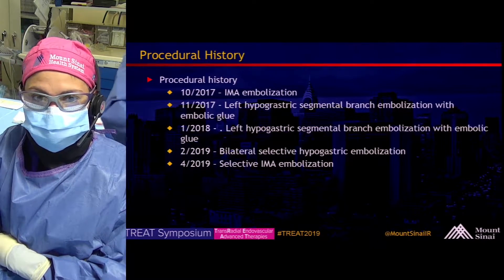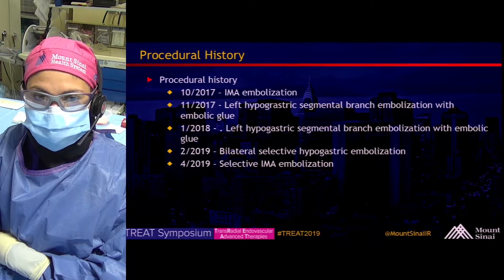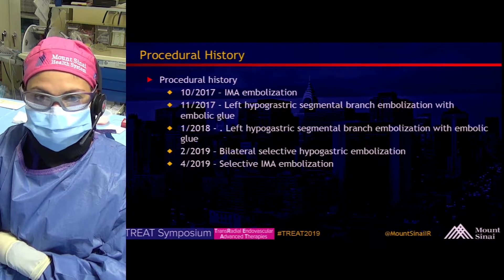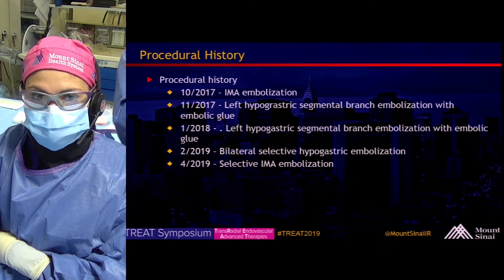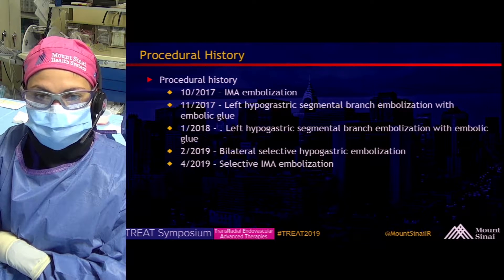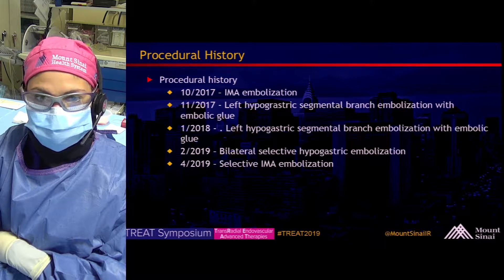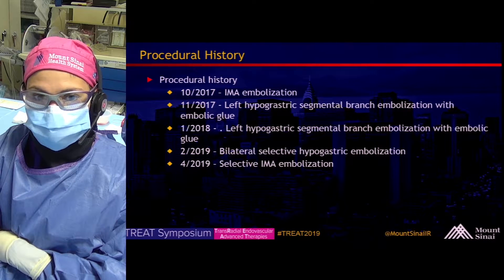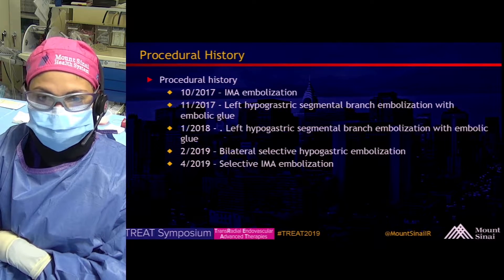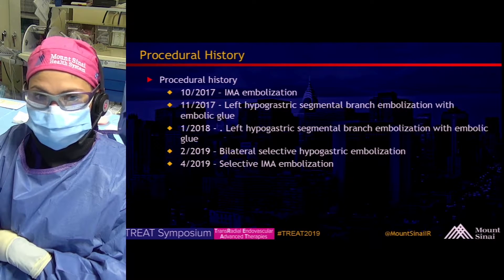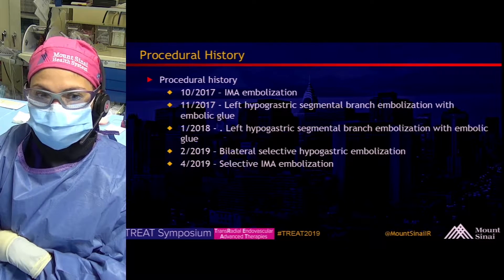This is his procedural history thus far. In October 2017, he had IMA embolization with multiple feeders from the IMA. In November of 2017, he had a left hypogastric segmental branch embolization with glue, and another one in January of 2018. Then he had bilateral subselective hypogastric embolizations in February and then an additional selective IMA embolization in April.